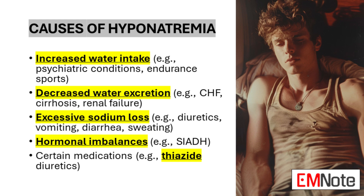Causes of hyponatremia. Hyponatremia can result from a variety of underlying conditions and factors. Excessive water intake, often seen in psychiatric patients with polydipsia or in endurance athletes overhydrating during events, can overwhelm the kidney's ability to excrete free water, leading to dilutional hyponatremia. Conversely, conditions that impair water excretion, such as congestive heart failure, cirrhosis, or renal failure, can cause water retention and subsequent hyponatremia.